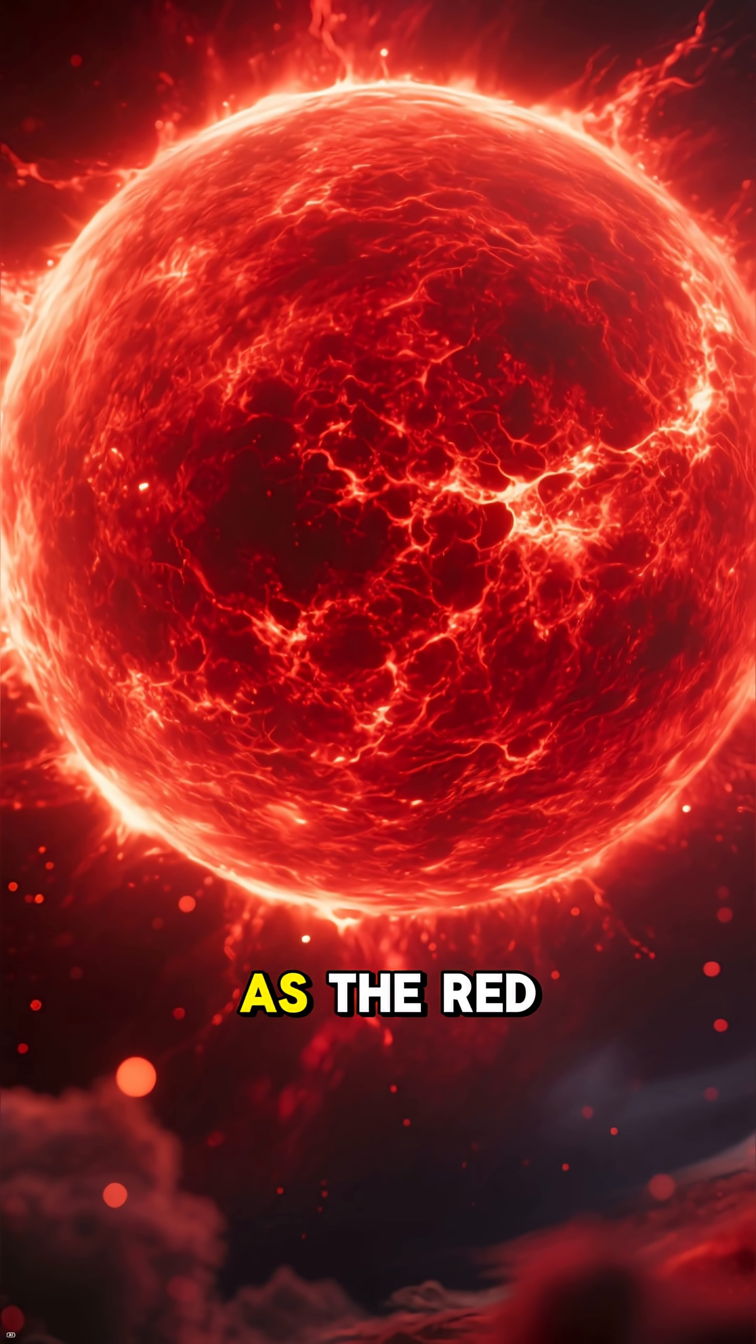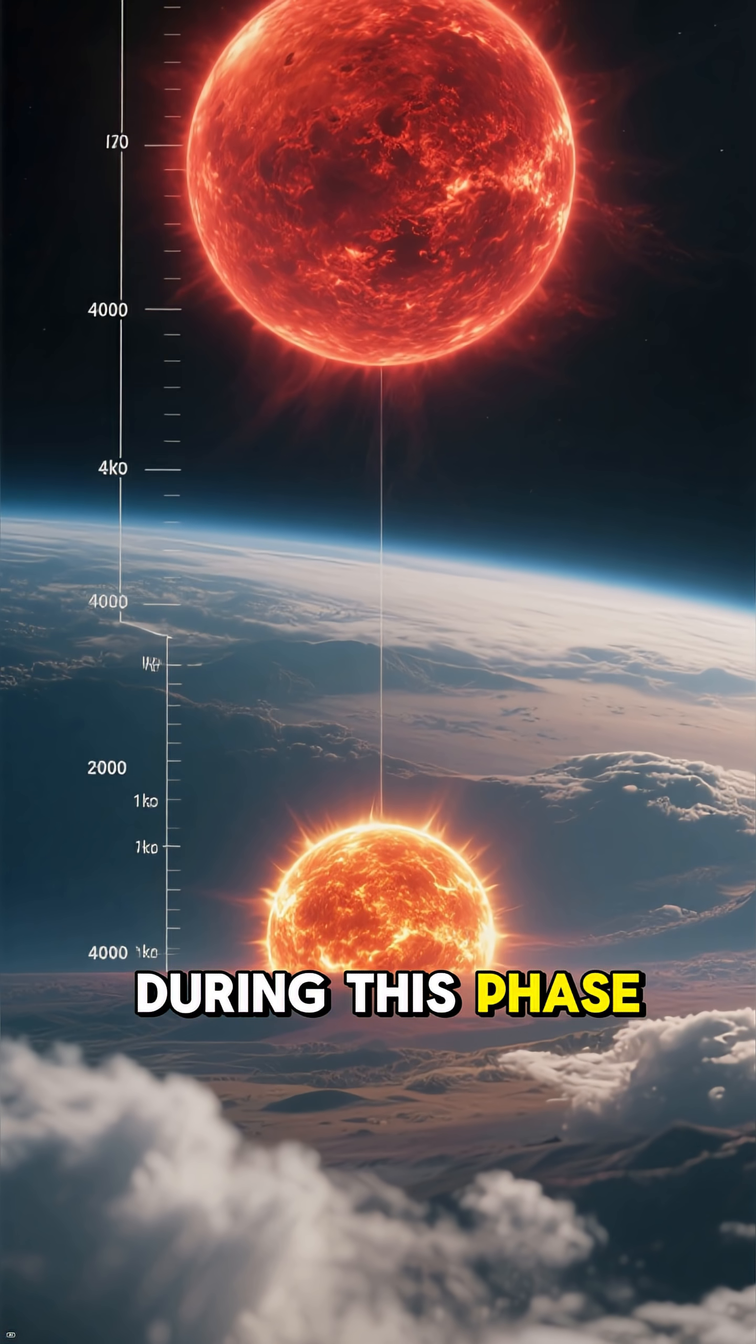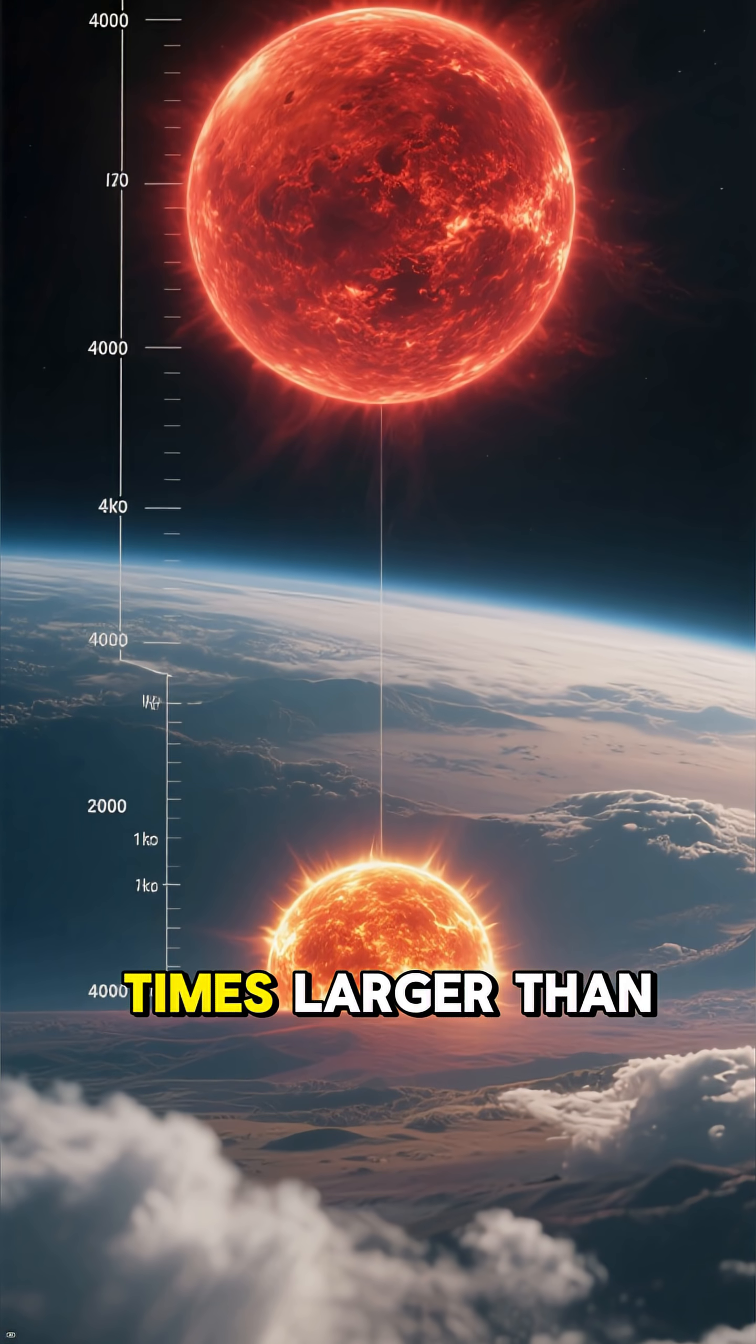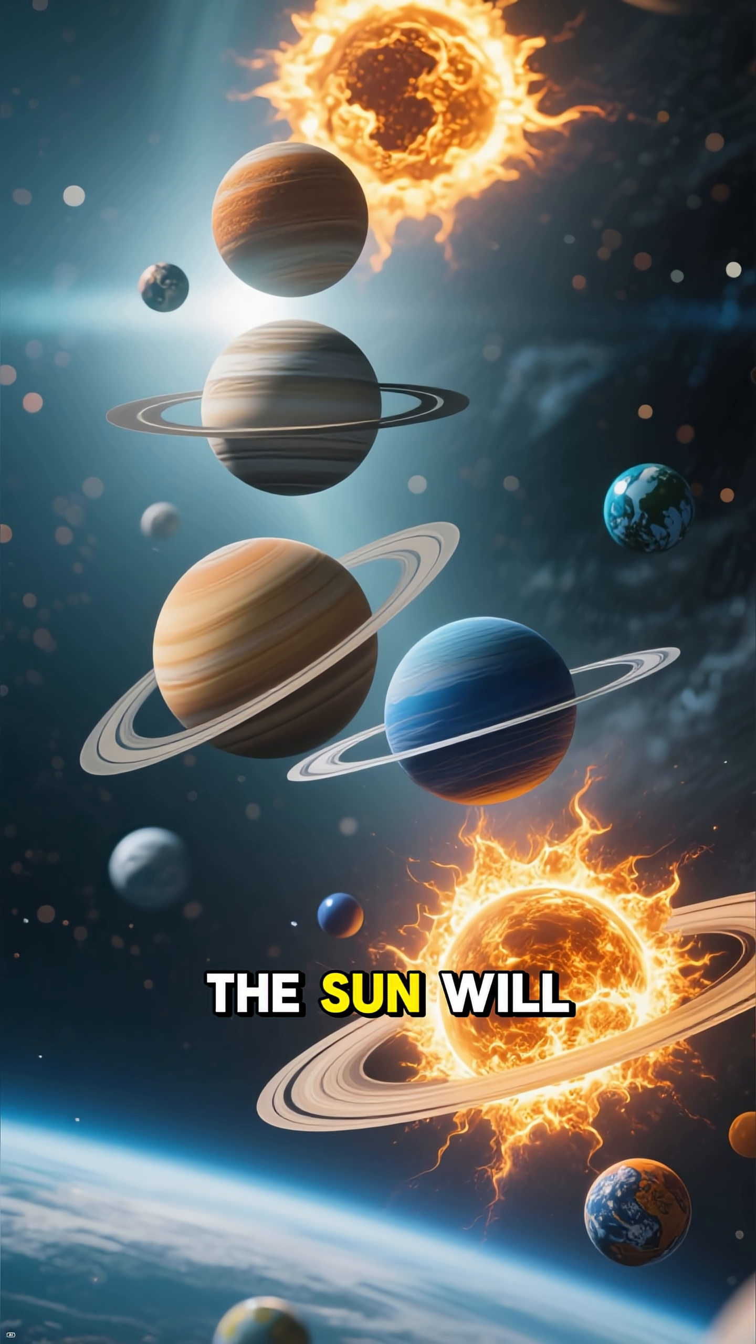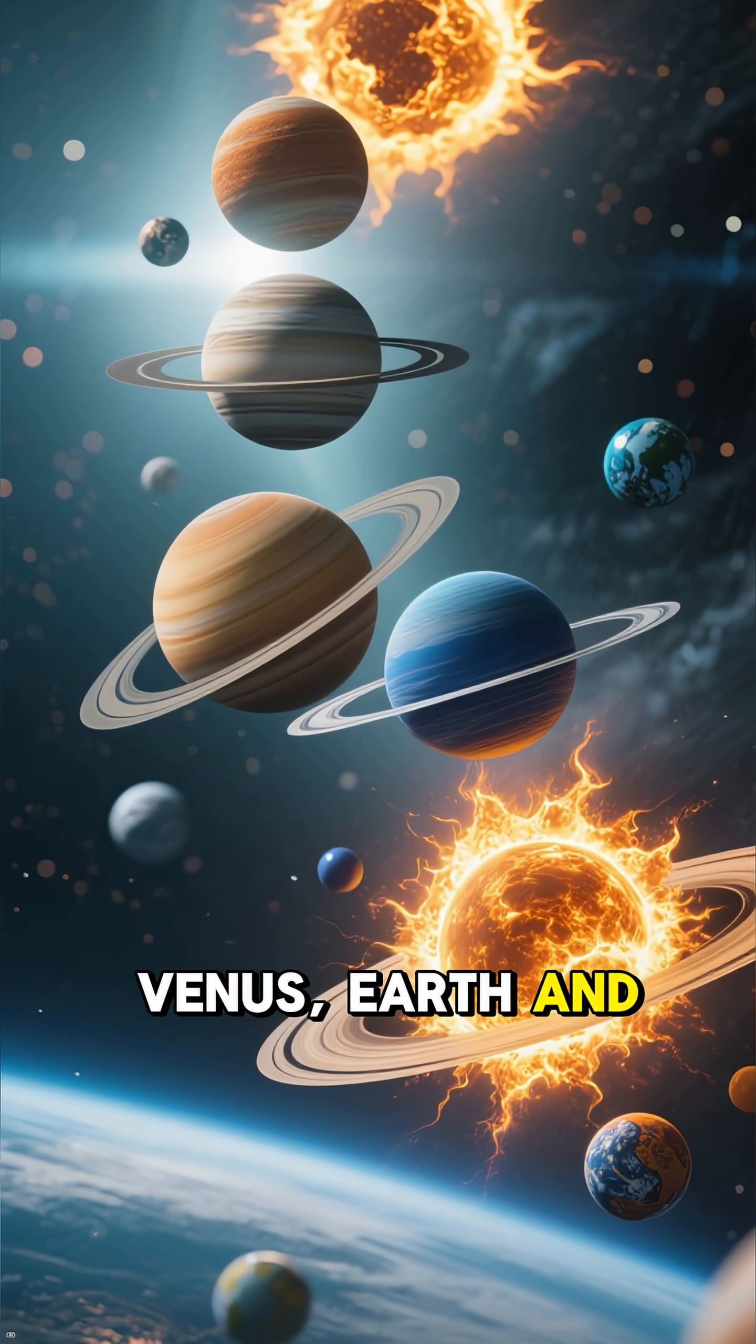This phase is known as the red giant phase. During this phase, the Sun will be 1,000 times larger than its current size. As you can see in this short, the Sun will engulf Mercury, Venus, Earth, and Mars.